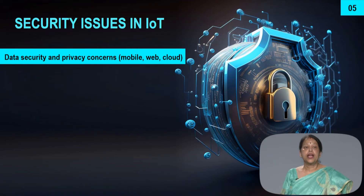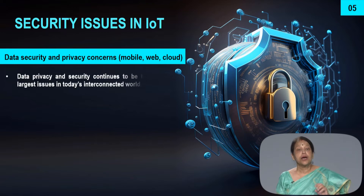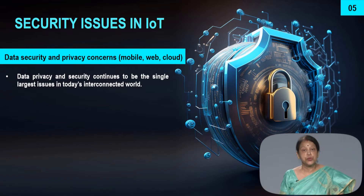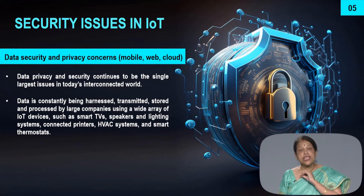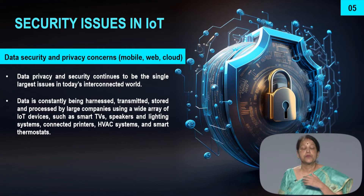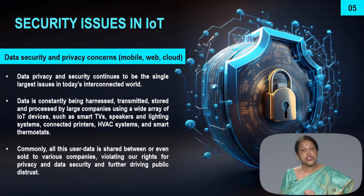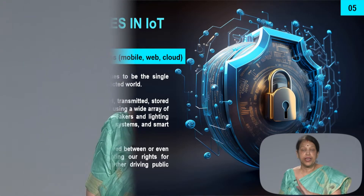Next is data security and privacy concerns from mobile, web, or cloud, as all your data are going to the cloud. Data privacy and security continues to be the largest issue in today's interconnected world because data is constantly being harnessed, transmitted, stored, and processed by large companies. With IoT devices like smart TVs, speakers, lighting systems, and cameras, data is automatically at huge risk. Anybody can take the data and misuse it. All this user data is shared between or even sold to different companies, sometimes violating your privacy rights or without your knowledge.